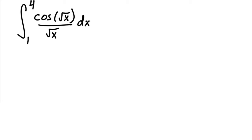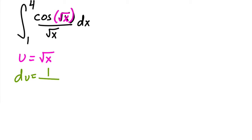This is an interesting problem because we've got two square roots here. Follow your basic strategy — the inside is almost always what needs to be u. Even though it seems like it wouldn't lead anywhere, notice that the derivative of √x is 1/(2√x) dx. The √x in du appears on the bottom, and that's where it is originally in the problem — the only thing missing is this 2.